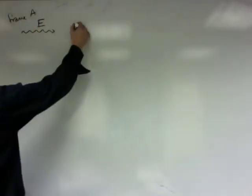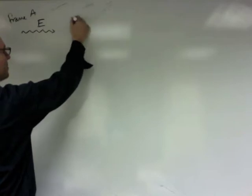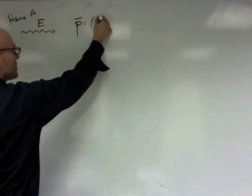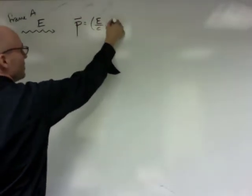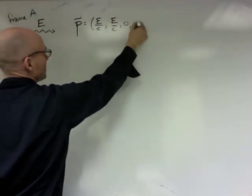This photon has four momentum, which is, as we've just said a million times, E over c, E over c, zero, zero.